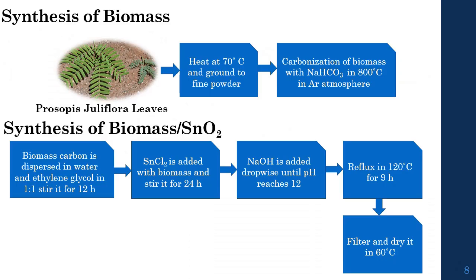Here we have given the synthesis process of the Biomass-SnO2 nanocomposites. Initially, we clean the Prosopis julifera leaves and heat them to 800 degrees Celsius in an inert atmosphere to get carbonized biomass. Then we disperse the sample in ethylene glycol, mix it with tin chloride salts, and reflux at 120 degrees Celsius for 9 hours, then filter and dry at 60 degrees Celsius to get the final Biomass-SnO2 nanocomposites.